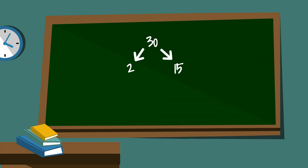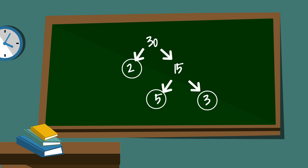2 times 15 is equal to 30. I will circle the 2 because it is prime. 5 times 3 equals 15 — I will circle the 5 and the 3 because they are prime. So the prime factorization of 30 is 2 times 5 times 3.